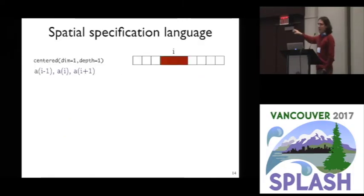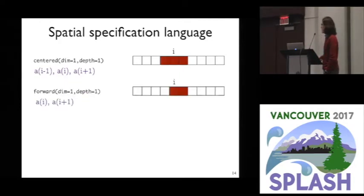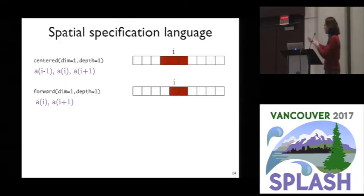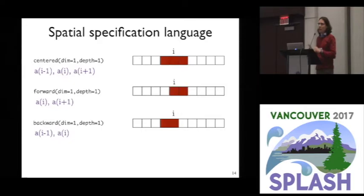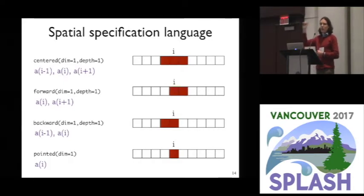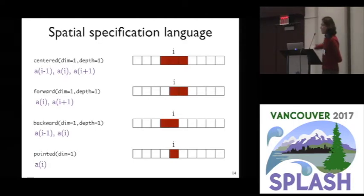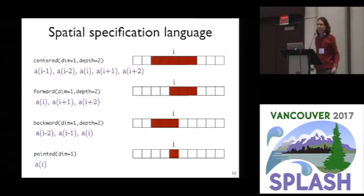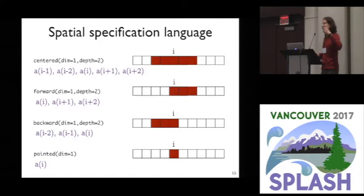There are four region constants: centred, forward, backward, and pointed. The symmetrical centred pattern, the asymmetrical forward pattern looking ahead to some depth, the asymmetrical backward pattern, and the pointed region — just looking at the origin point, a point-wise transformation. There's a dimension parameter and a depth parameter, so you can have a centred pattern to depth two, giving A[i-1], A[i+1], A[i-2], A[i+2], and so on.